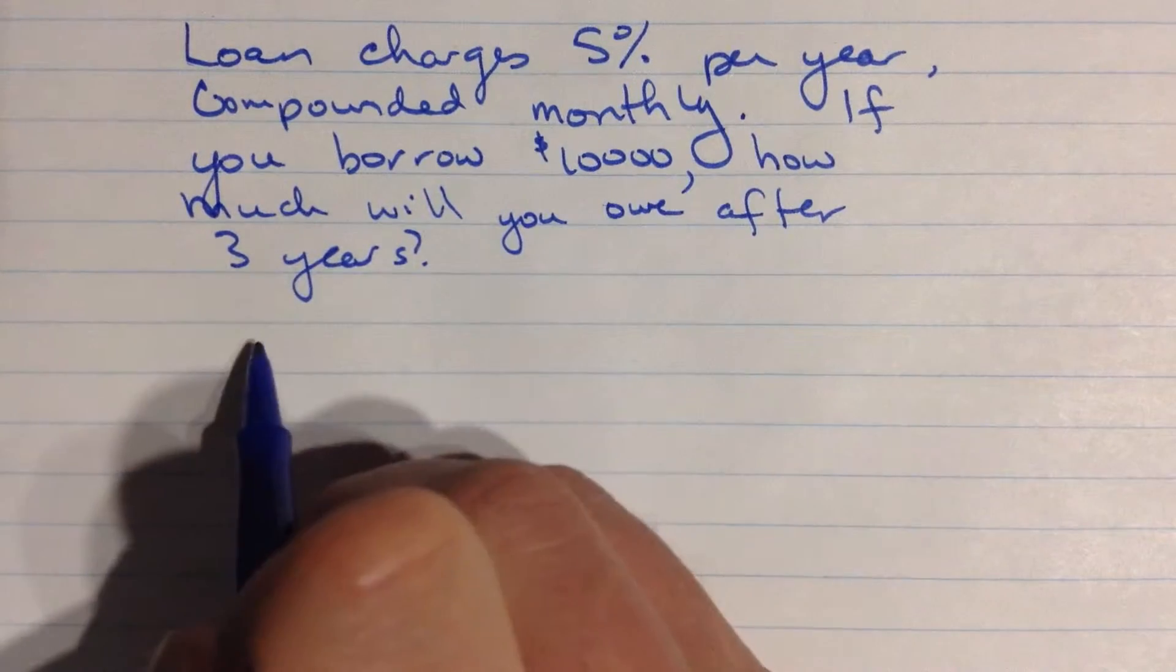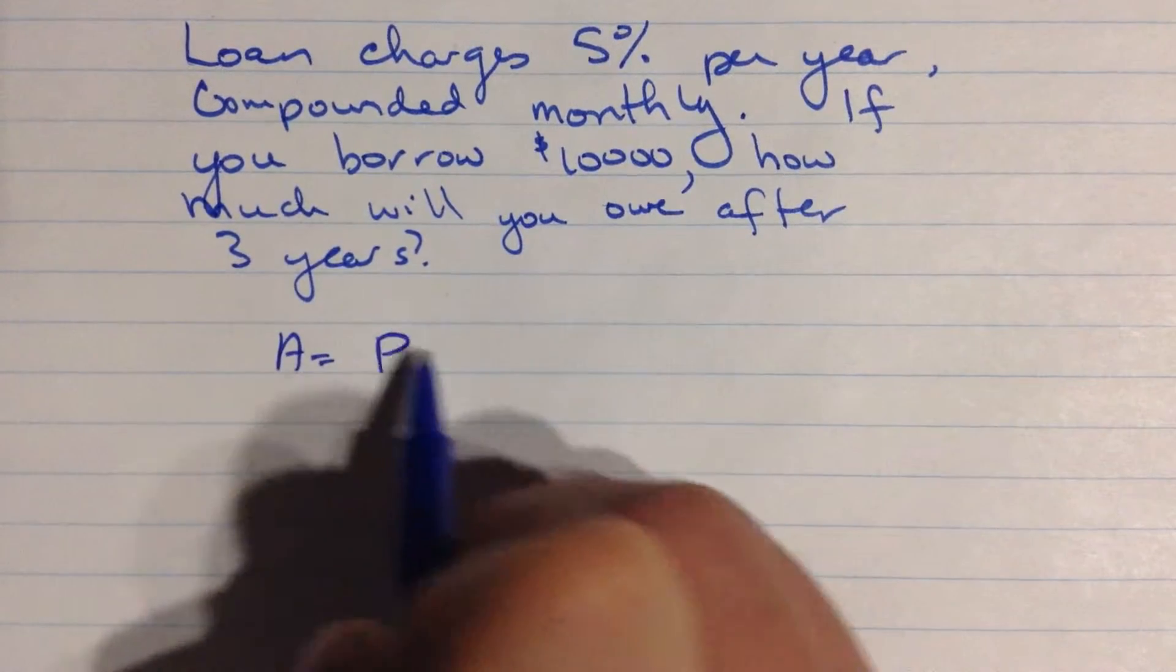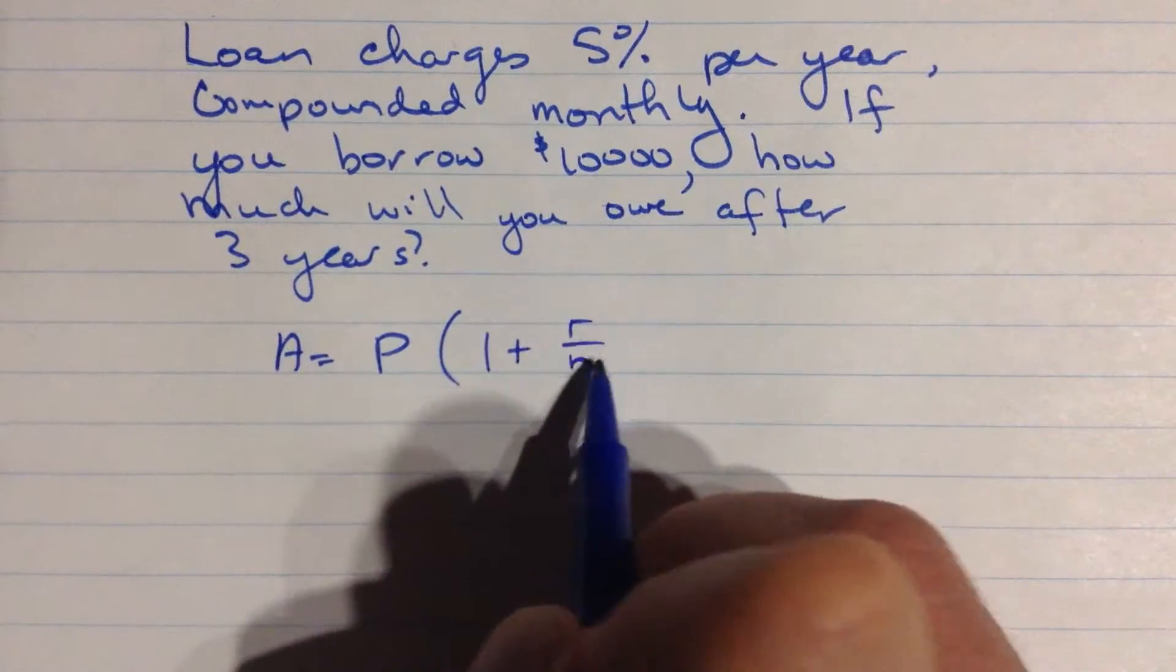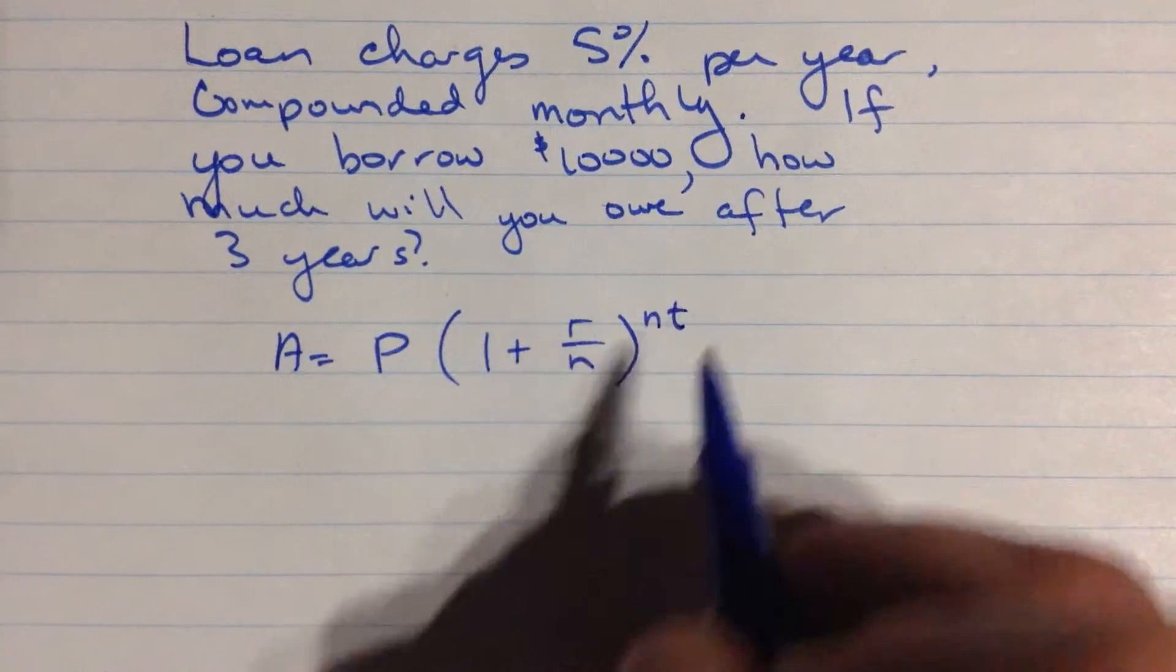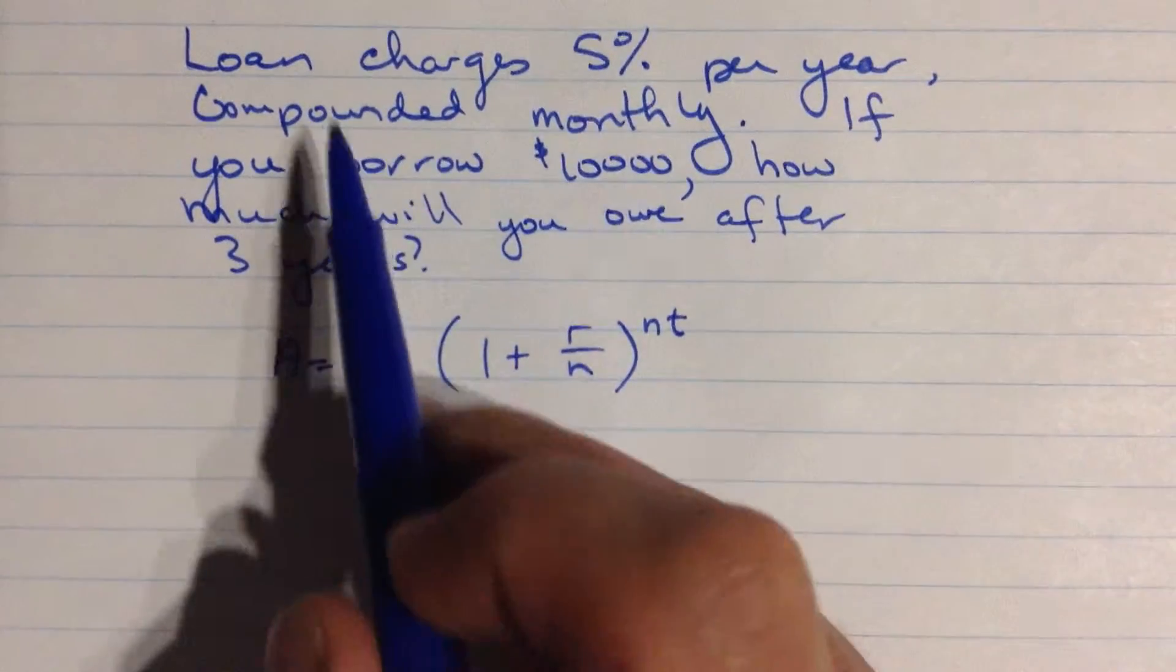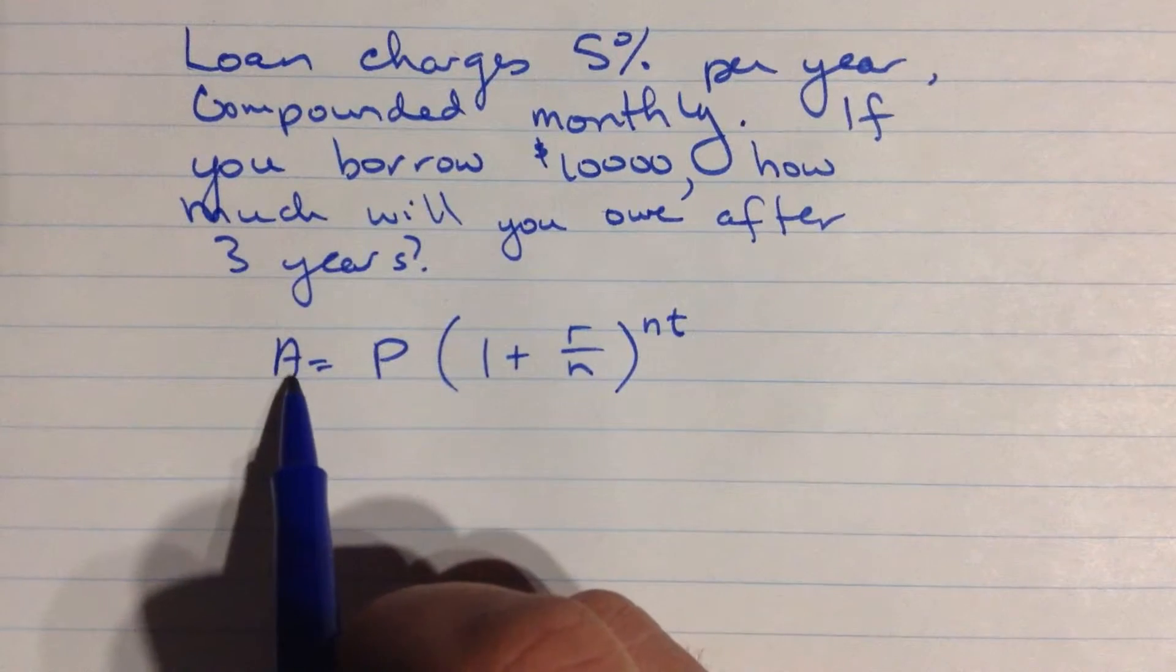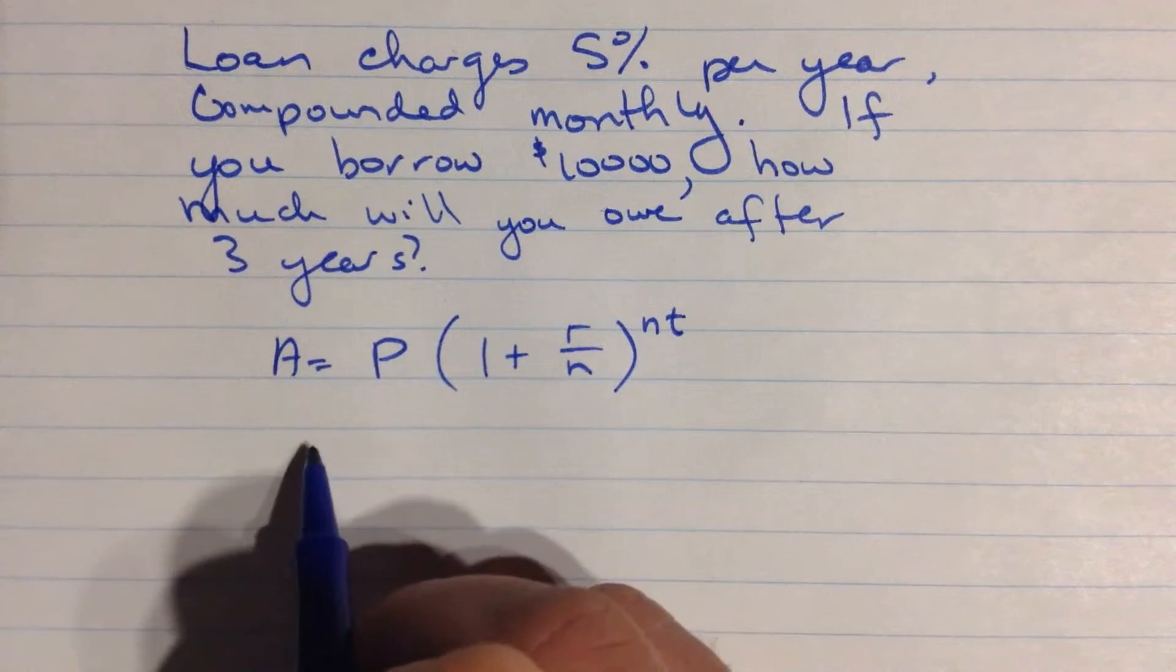Well, let's write our formula again. A is P, the principal, times 1 plus R over N to the Nt, N times t. Again, let's look at our description to see what we have here. We're trying to find again, trying to find the amount, the final value.